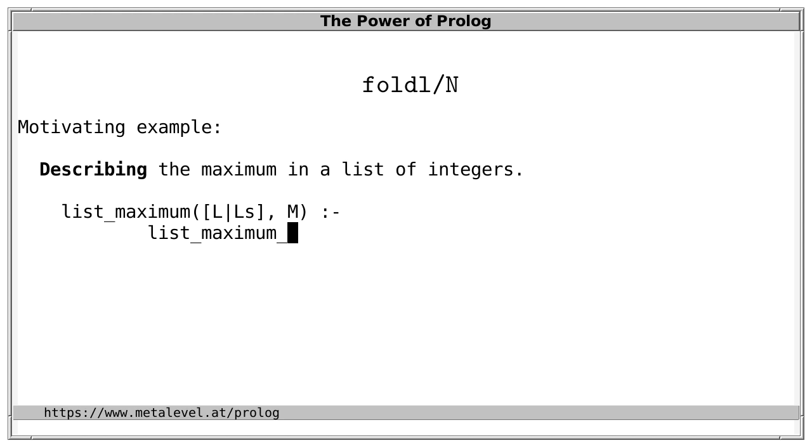And this predicate shall be a relation between the remaining elements of the list, the maximum element seen so far. So initially, the first element of the original list is the maximum element seen so far, because it is also the only element seen so far. And third, the maximum element of the whole list. And this auxiliary predicate is easy to define.